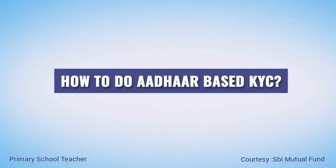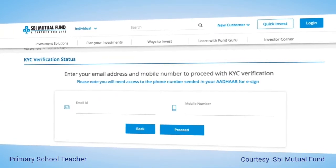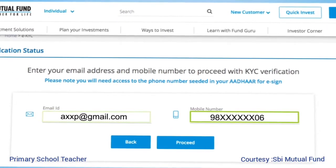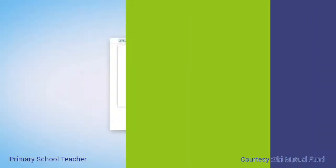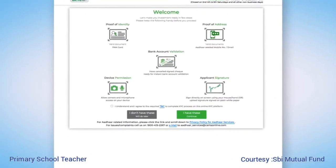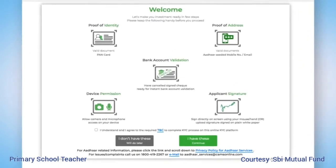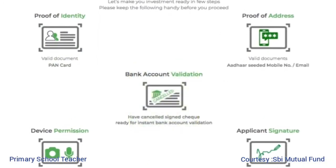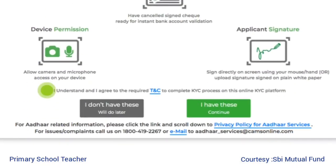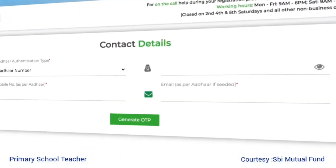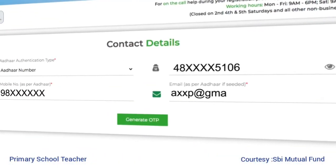To do Aadhaar-based KYC, enter your mobile number and email ID and click on proceed. You will be redirected to the checklist screen where you must ensure you have the required documents and accept the terms and conditions.